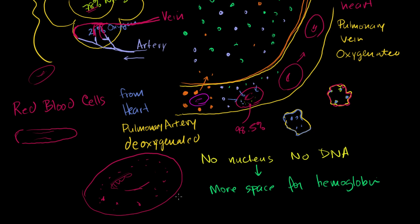Where I left off in the last video, we talked about how the hemoglobin in red blood cells is what sops up all of the oxygen so that it increases the diffusion gradient, or it increases the incentive for the oxygen to go across the membrane. If there's less concentration here than there, the oxygen will diffuse across the membrane, and there's less inside the plasma because the hemoglobin is sucking it all up like a sponge.